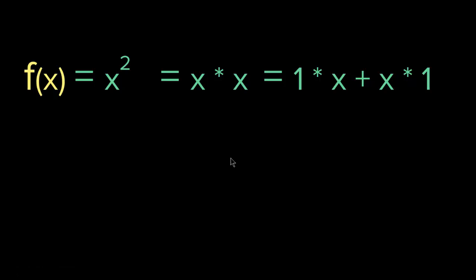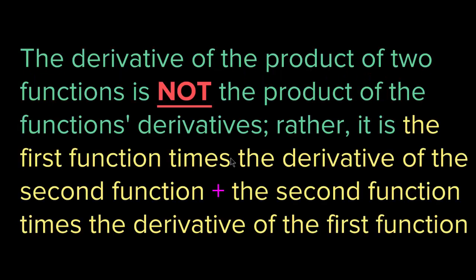So this is about the product rule: the derivative of the product of two functions is not the product of the functions' derivatives. Rather, it is the first function times the derivative of the second function, plus the second function times the derivative of the first function.